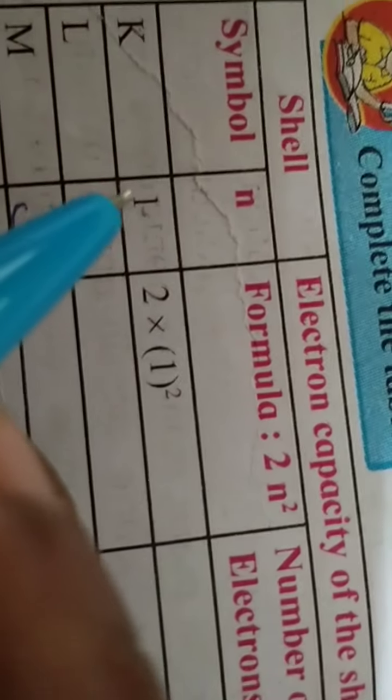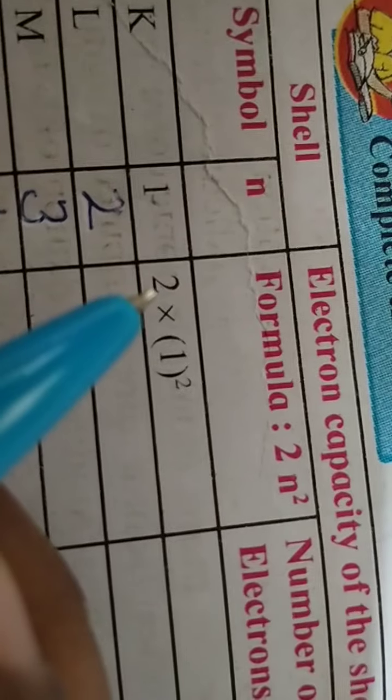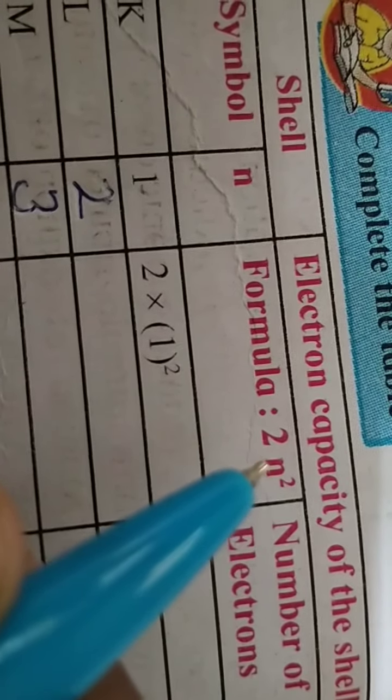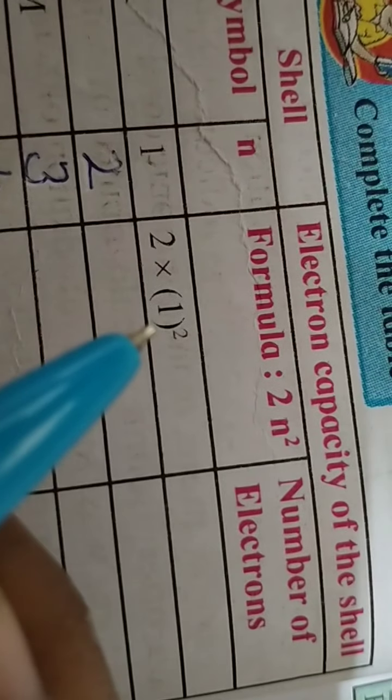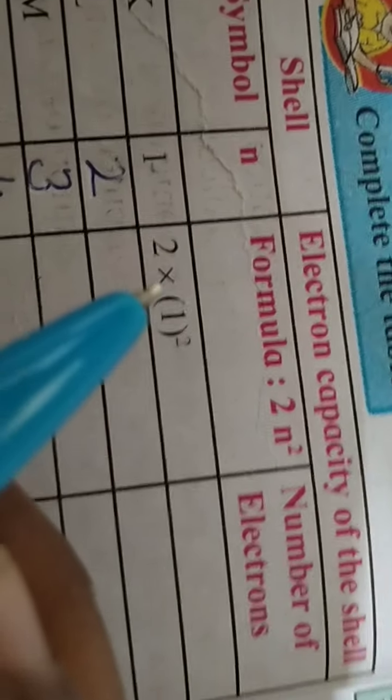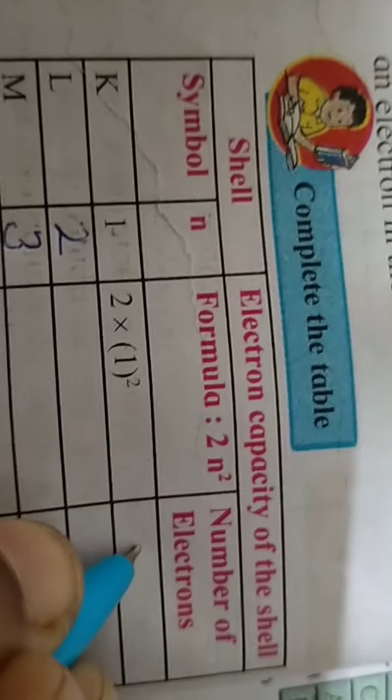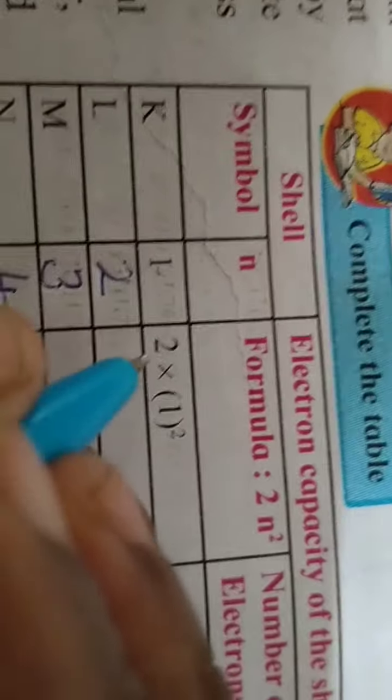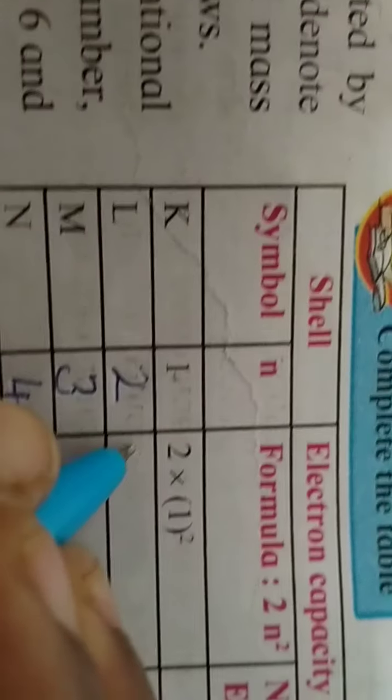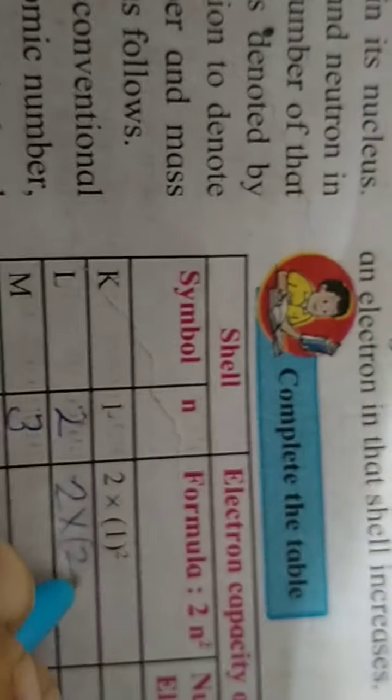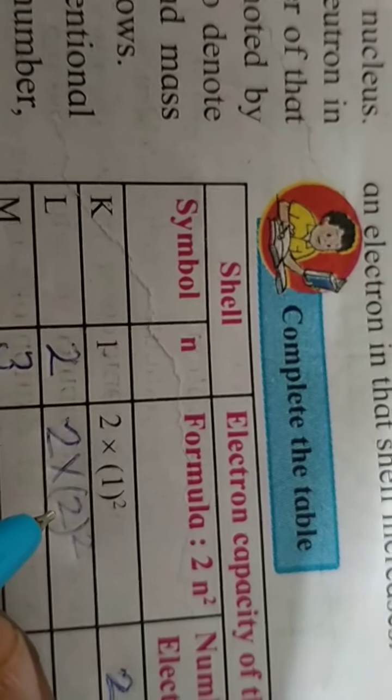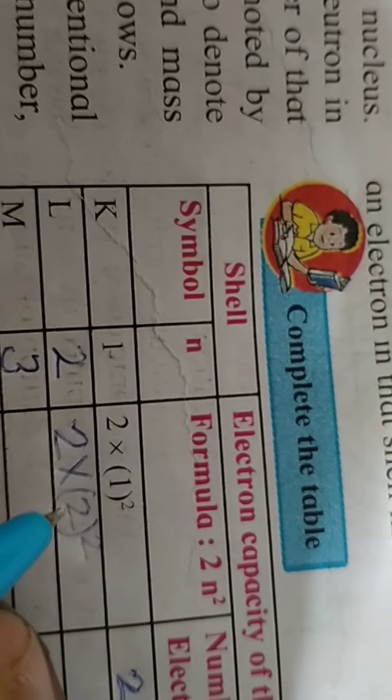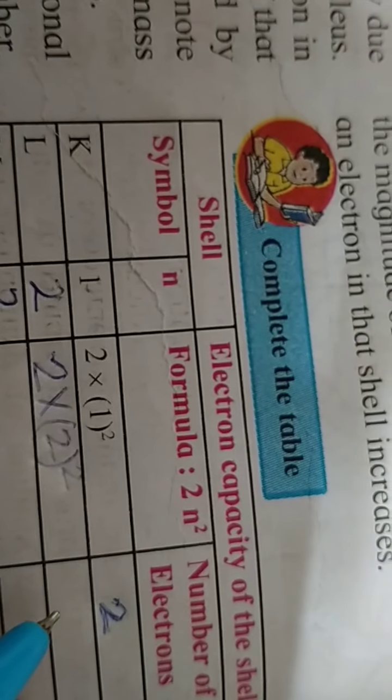Now, for the first value of n for K, we substitute 1 in the formula. So 2 into 1 squared equals 2. The first shell will have 2 electrons. Next, for L, 2 into 2 squared, which is 2 into 4, equals 8. The second orbit will have 8 electrons.